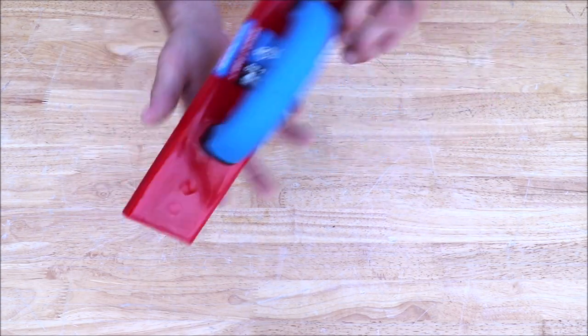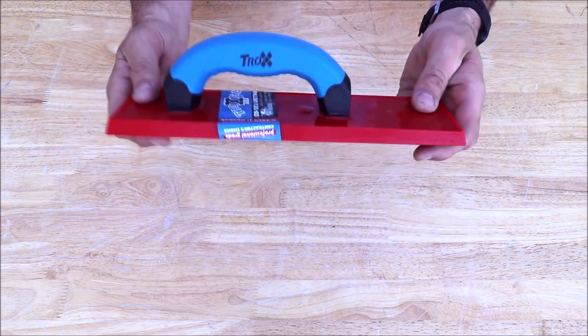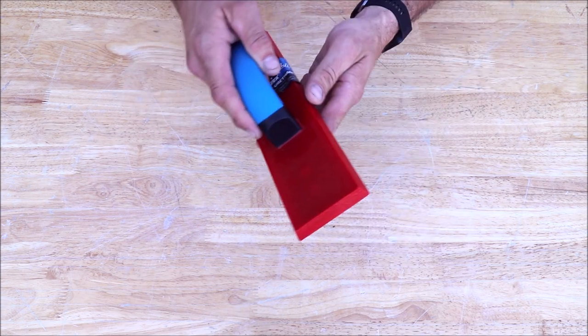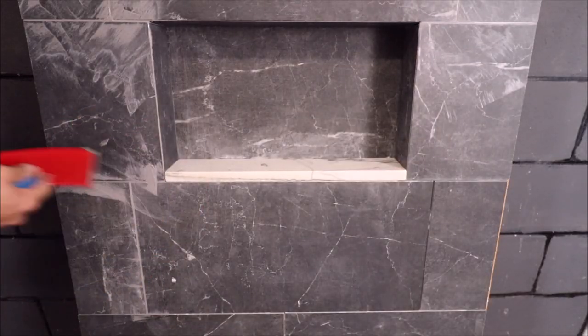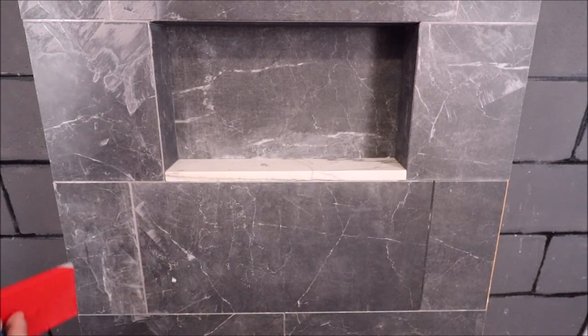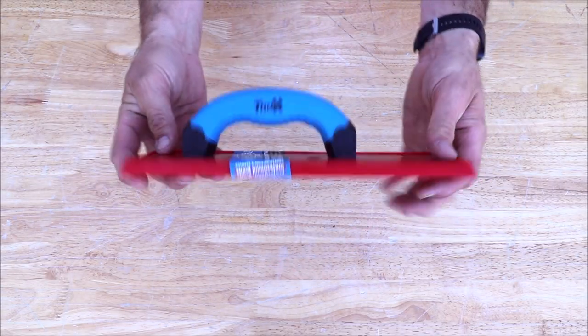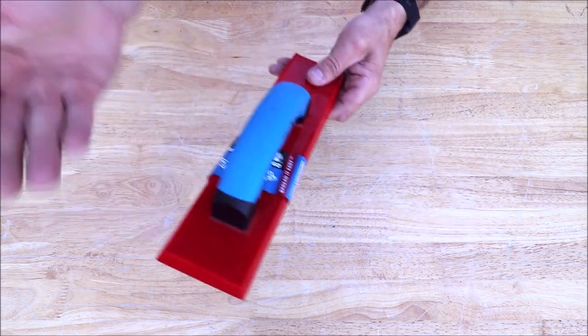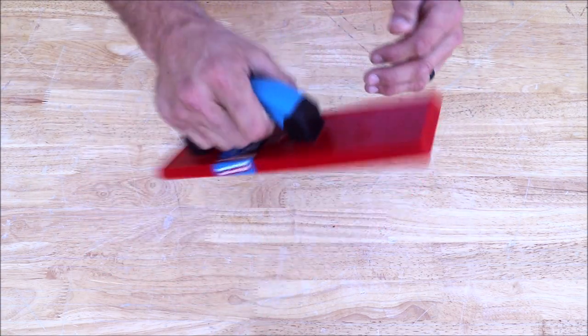Here we have what they call a three by twelve baseboard grout float. Offset handle. This is for hard to reach areas. Under your cabinets when you want to grout, when you butt up to your toe kicks. Good for your shower niche. To get up in those corners. Offset handle, hard to reach areas. Pure urethane float. You've got your comfort grip. Very durable, very comfortable float.